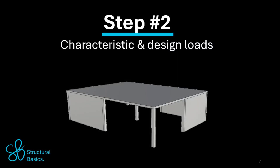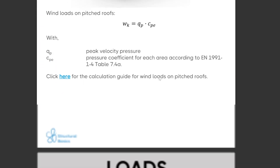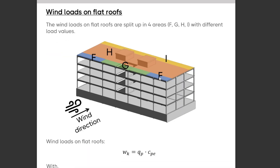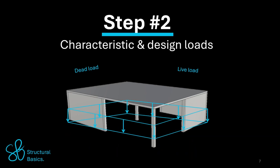Step 2: applying the characteristic and design loads. First we need to figure out the characteristic area loads like dead and live load. Calculating the loads that act on the slab isn't the topic of this video, but I'll leave a link to a free structural design cheat sheet in the video description. In it you'll find all formulas to calculate wind, snow, dead, and live load. After you have calculated the loads with the cheat sheet, we then apply these loads to the slab.